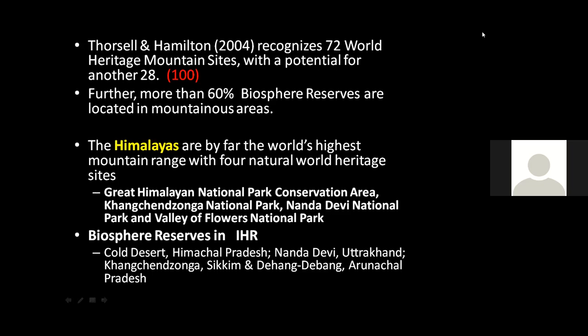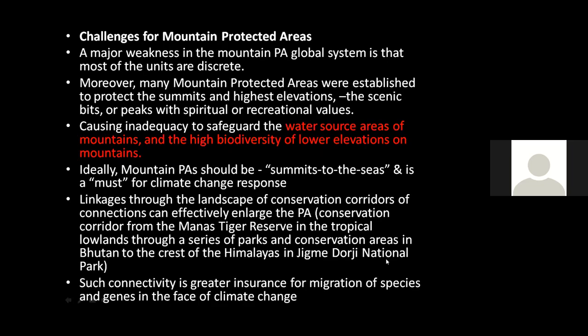Coming down to the Himalayas, there are four heritage sites in the mountain area: the Great Himalayan National Park Conservation Area, Kanchenjunga, Nanda Devi, and Valley of Flowers. As for biosphere reserves under the Man and Biosphere programme, there are four biosphere reserves in the Indian Himalayan Region.